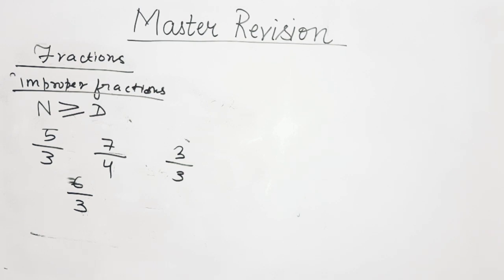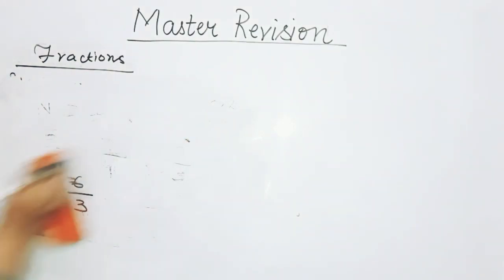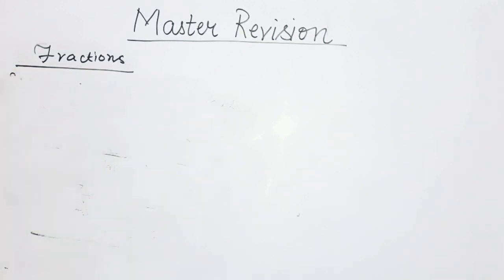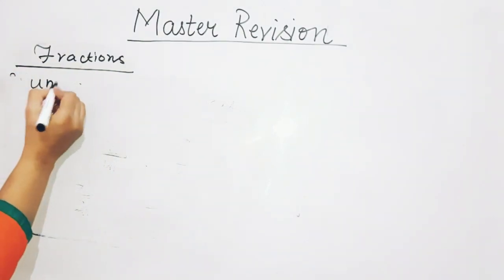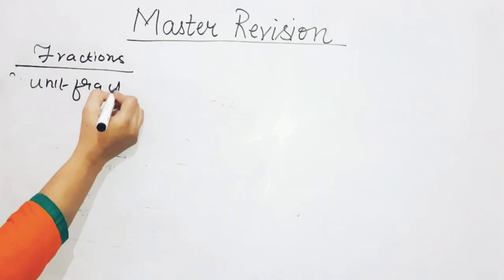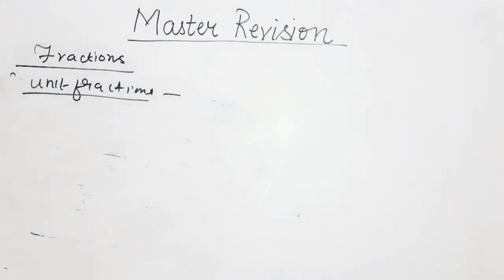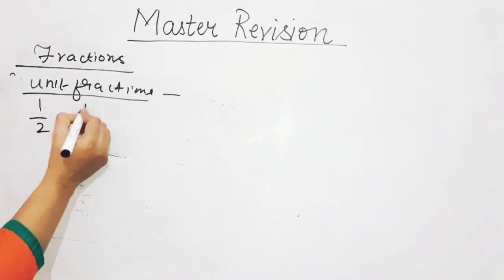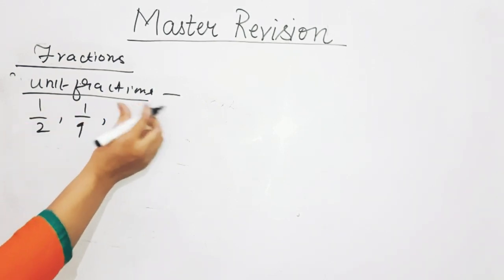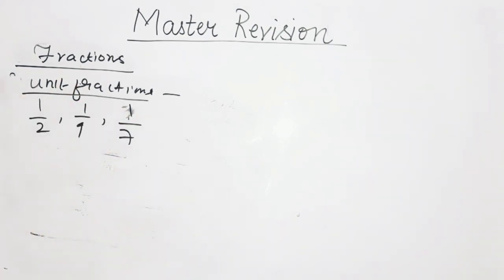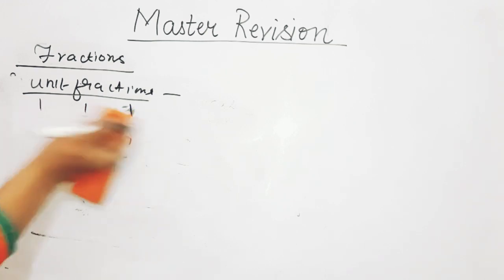Unit fractions are the fractions where the numerator is 1. Examples: 1 upon 2, 1 upon 9, 1 upon 7 — these are all unit fractions.